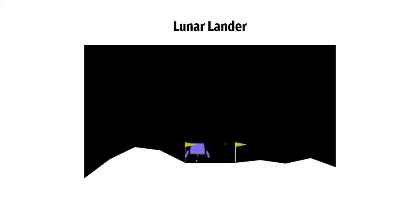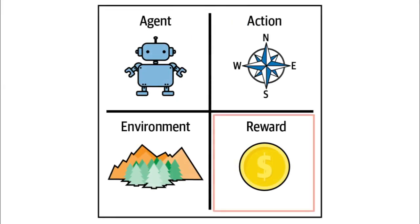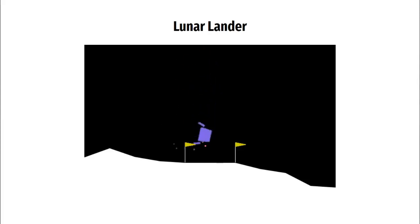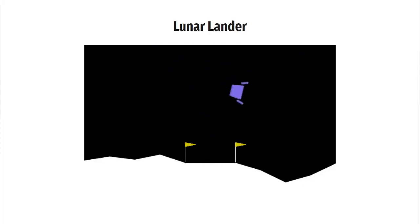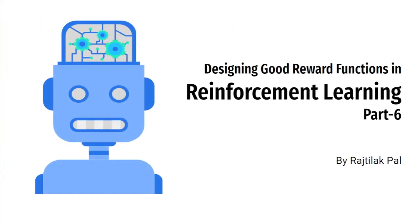From the first video of this series, people have been waiting to train the lunar lander problem. Finally, we have all the components in place to train this task except one component: the reward function. We need to design a good reward function for this task, otherwise the agent might never learn to land the vehicle on the surface. Welcome to the sixth and last video of this reinforcement learning series. In this video, we will learn how to design good reward functions that make the training process very easy.